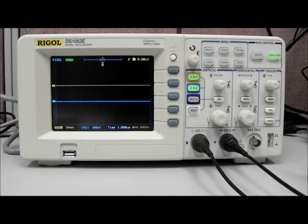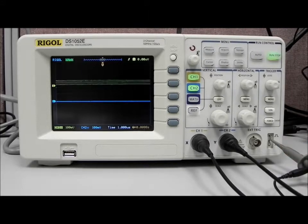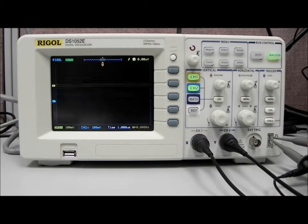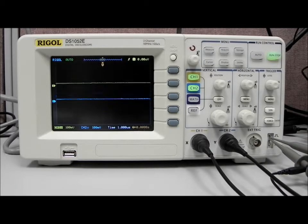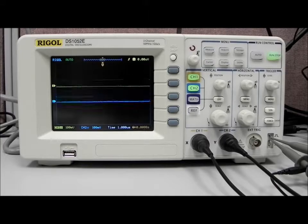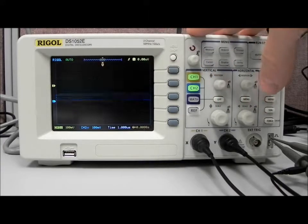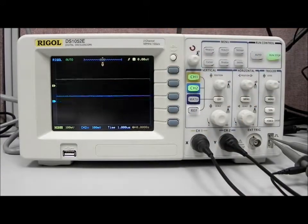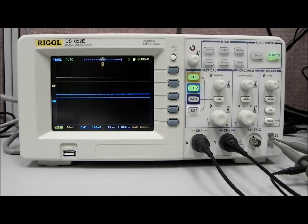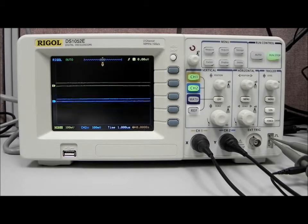First thing we're going to do is go to the probe compensation outputs here which is going to deliver a one kilohertz, approximately three volts square wave. You can see that with the factory defaults, which is where we're starting, we have a lot of, well we're not capturing the signal exactly like we would like.